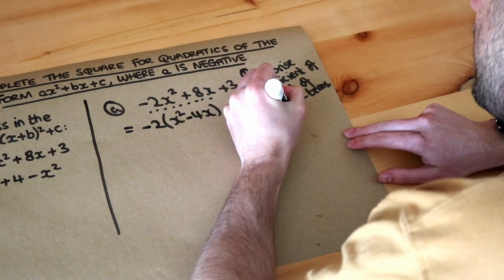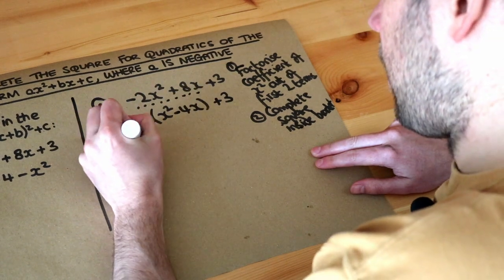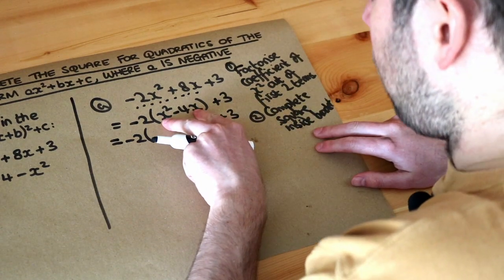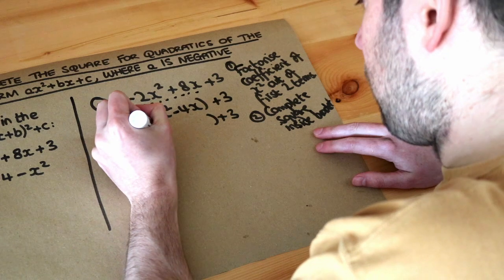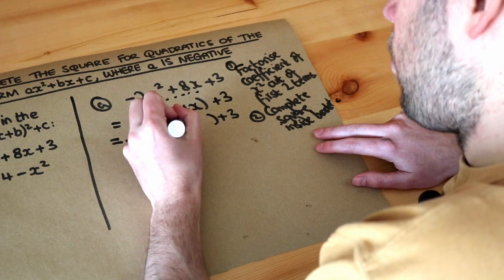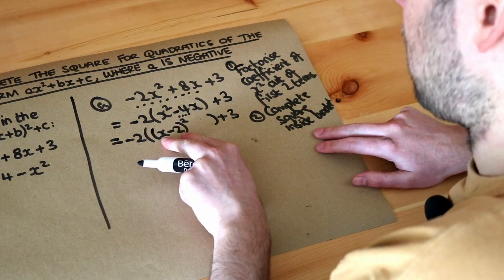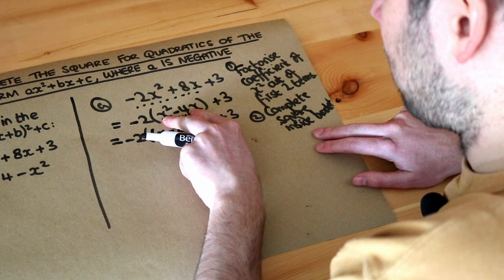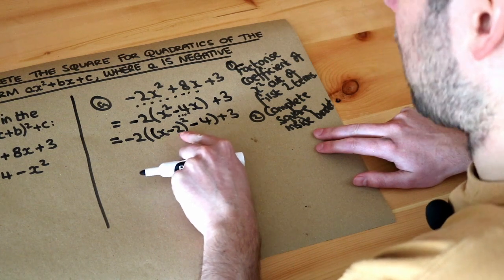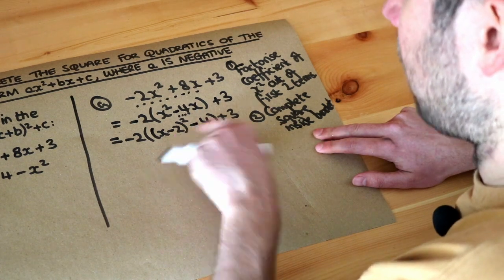The second step is to complete the square inside the bracket. Inside this bracket, we complete the square by halving the number in front of the x, so we write (x minus 2) squared. Half of minus 4 is minus 2. Remember, if you expand that you'd get x squared minus 4x plus 4, so we don't want that plus 4, meaning we subtract 4. So you always have minus and then whatever that number is squared.